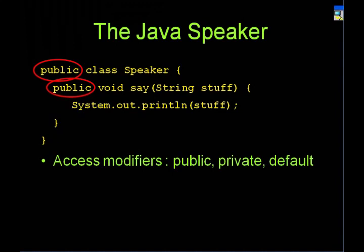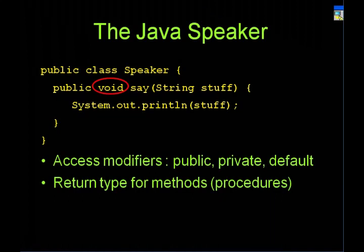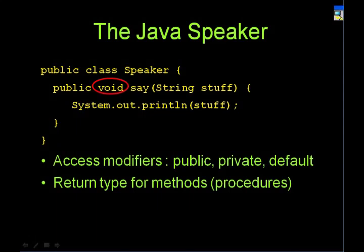Those are access modifiers; there are a lot of details, but most you'll learn next semester. The next thing to notice is this 'void' keyword. In Scheme, all your functions return something — a value, a lambda, something. But in Java, you can define methods that don't actually return anything. When you ask the speaker to say something, he just prints it out to the screen — there's no actual return value. So you say the return type is void, meaning you are not going to return anything.